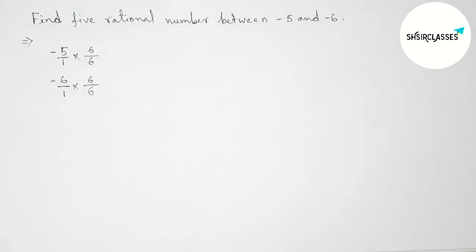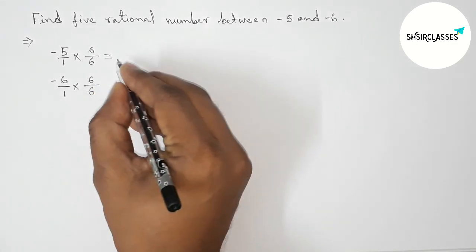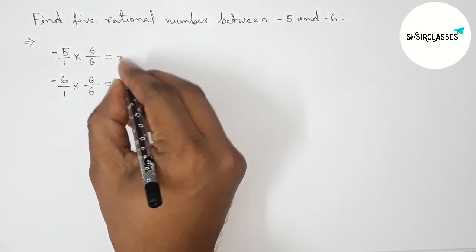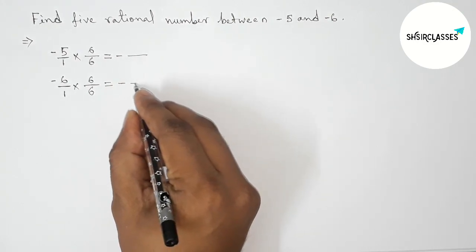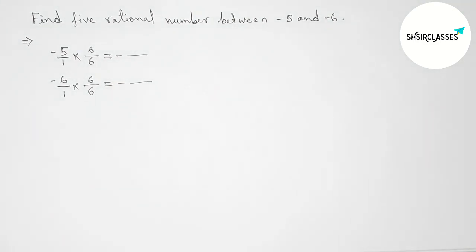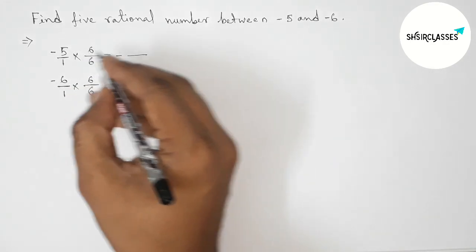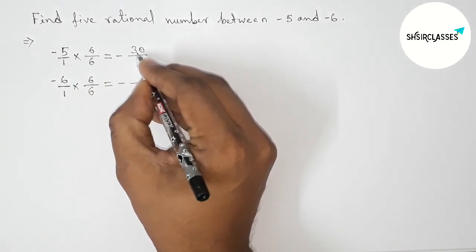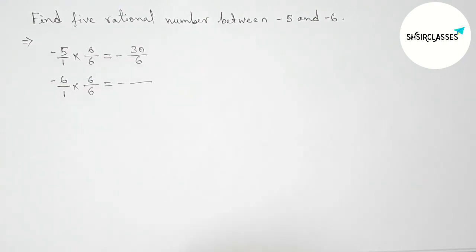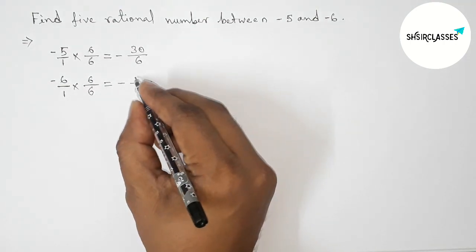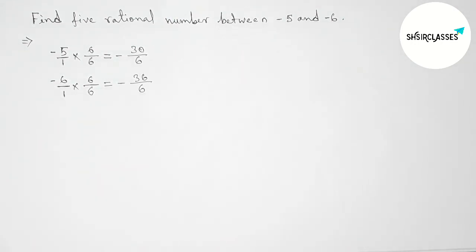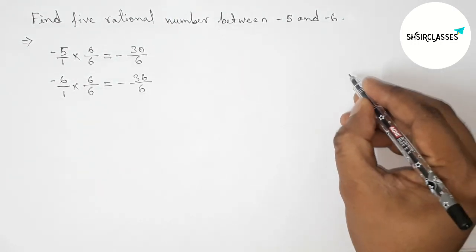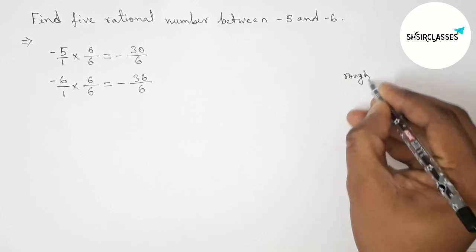Now simplifying all this: 6 times 5 is 30, 6 times 1 is 6, so minus 30 by 6. And 6 times 6 is 36 by 6. Now let's discuss some important calculation here.